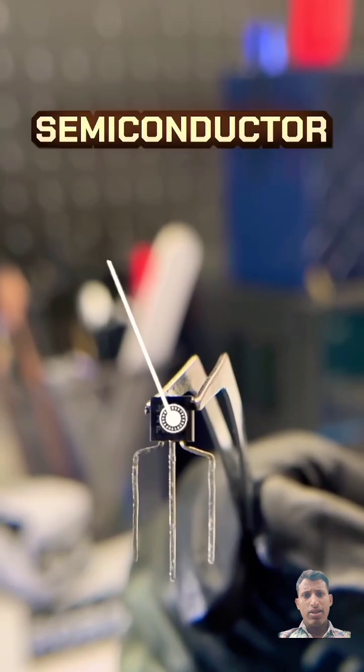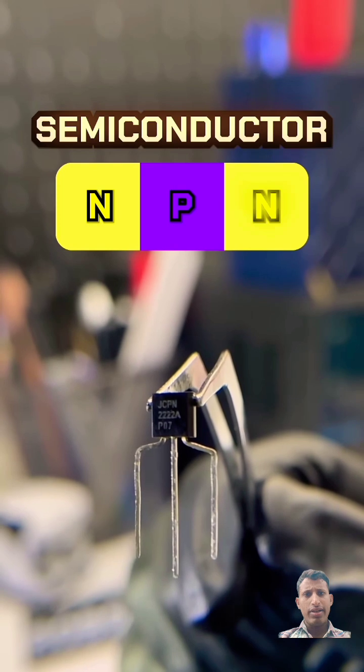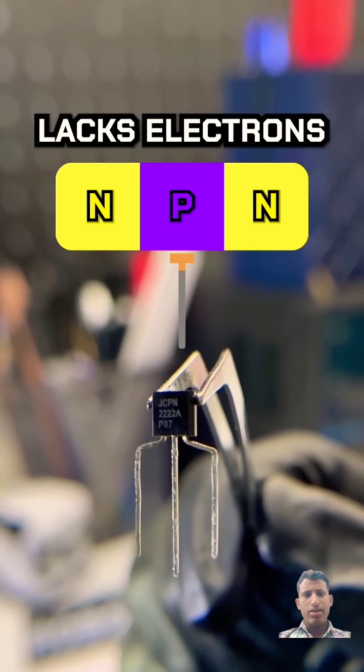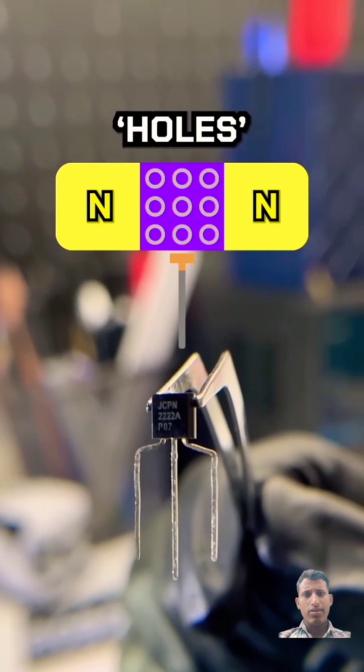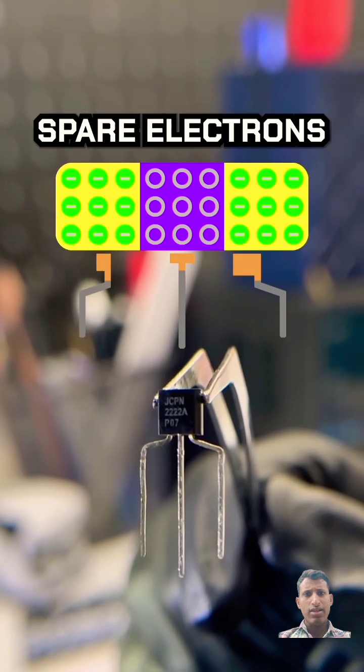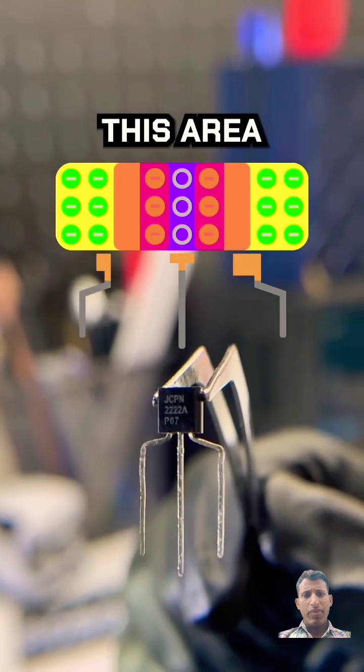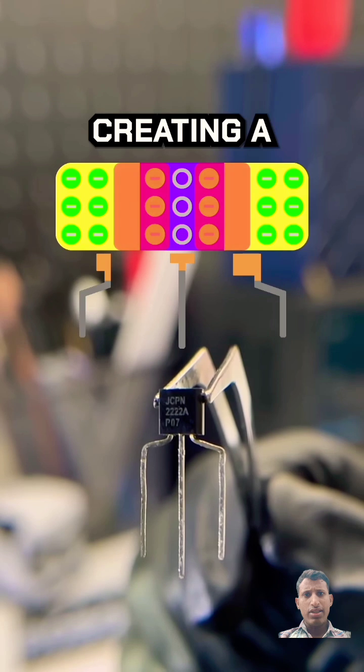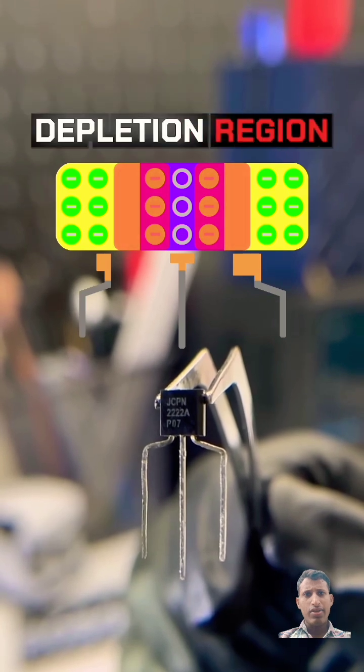Let's take a closer look. It's made of three layers, an N, P, and N-type. The P-type base lacks electrons and has holes. The N-types have spare electrons, filling the holes. This area now lacks free charges, creating a repelling barrier called the depletion region.